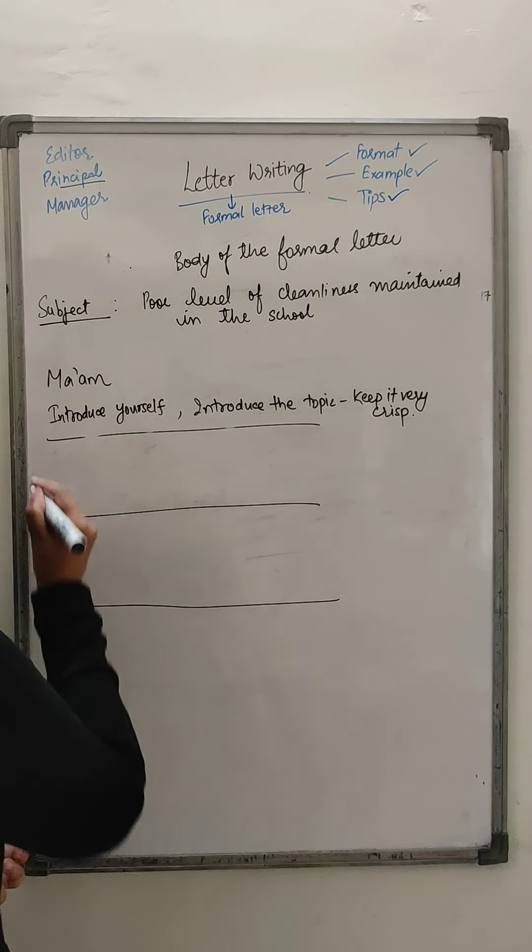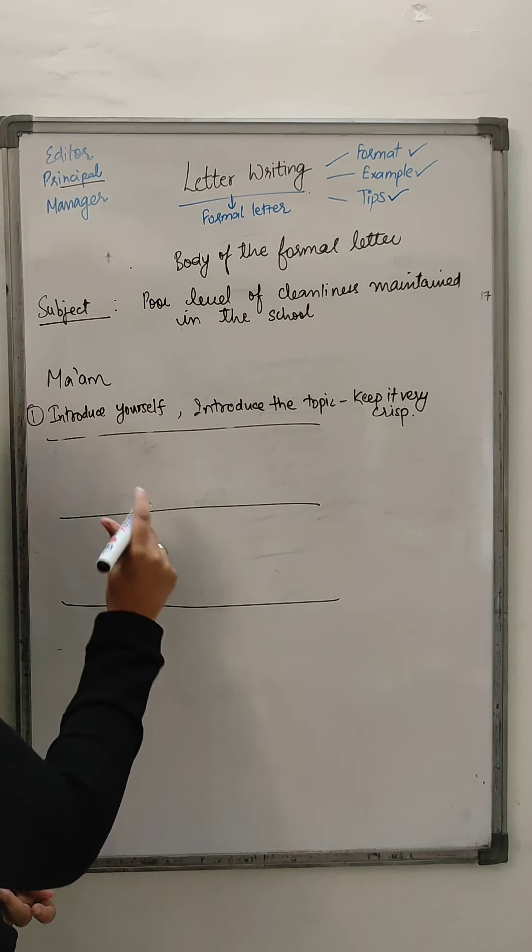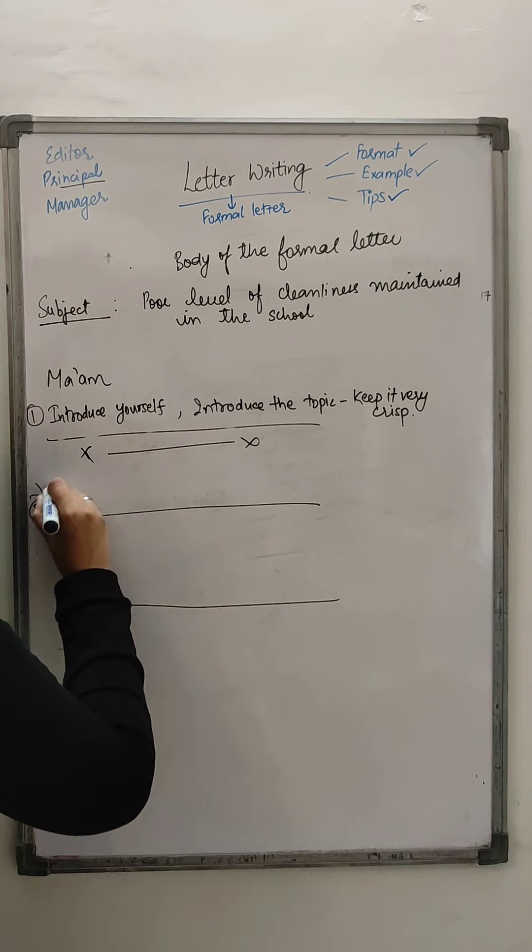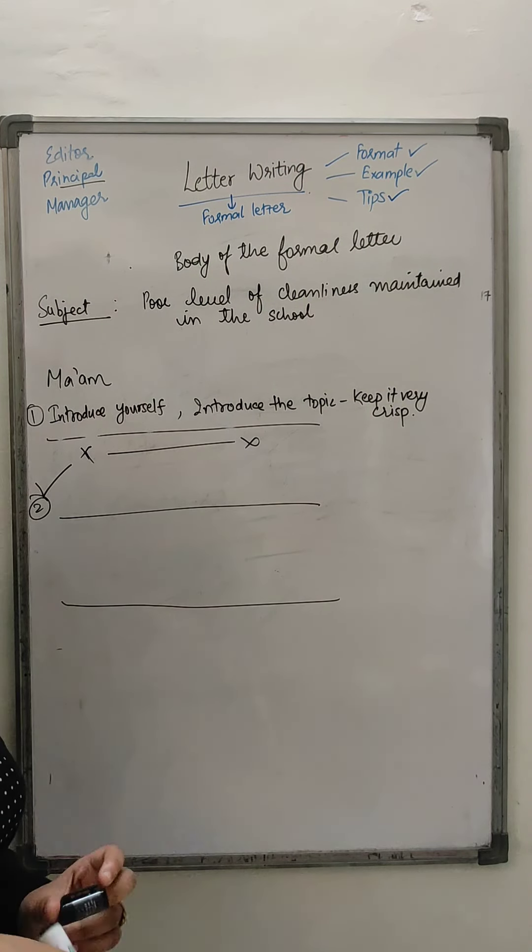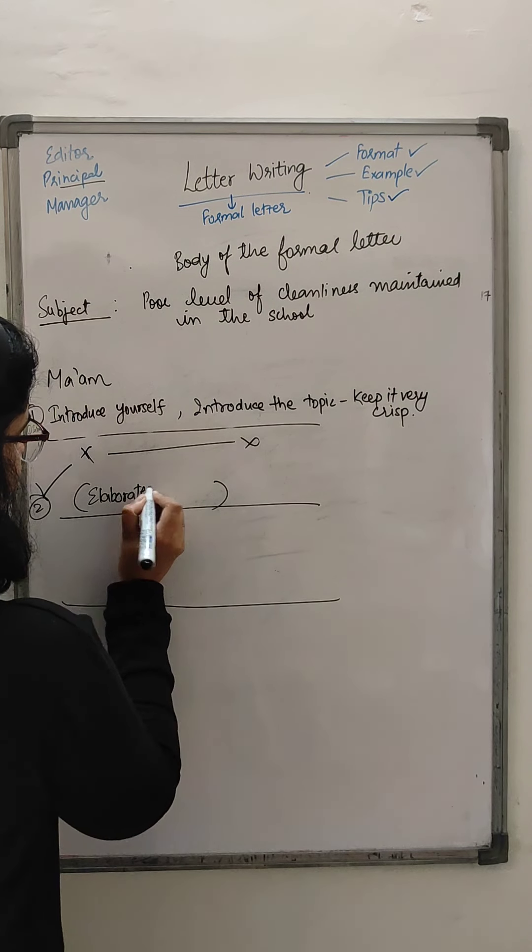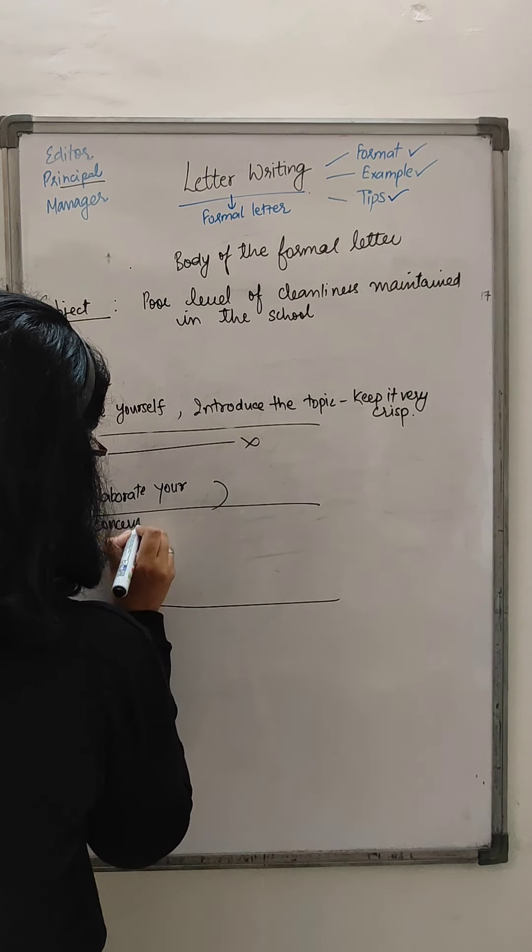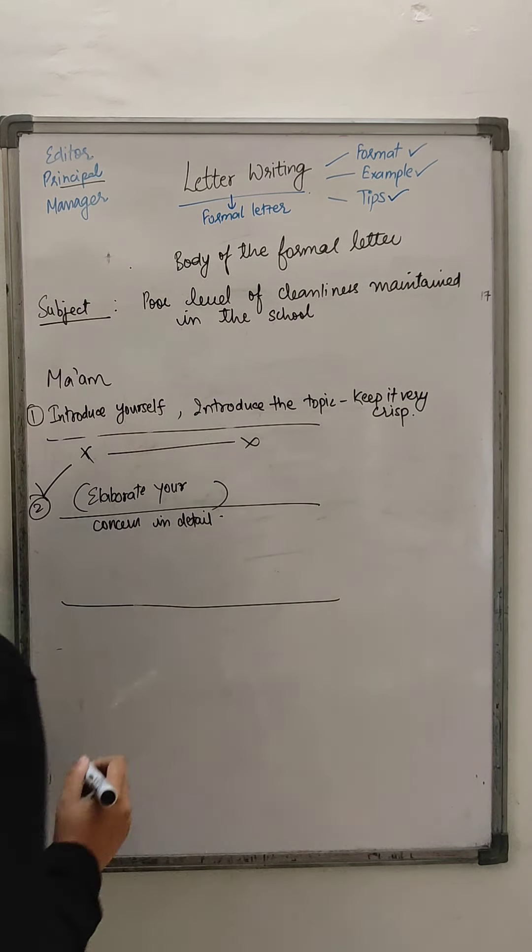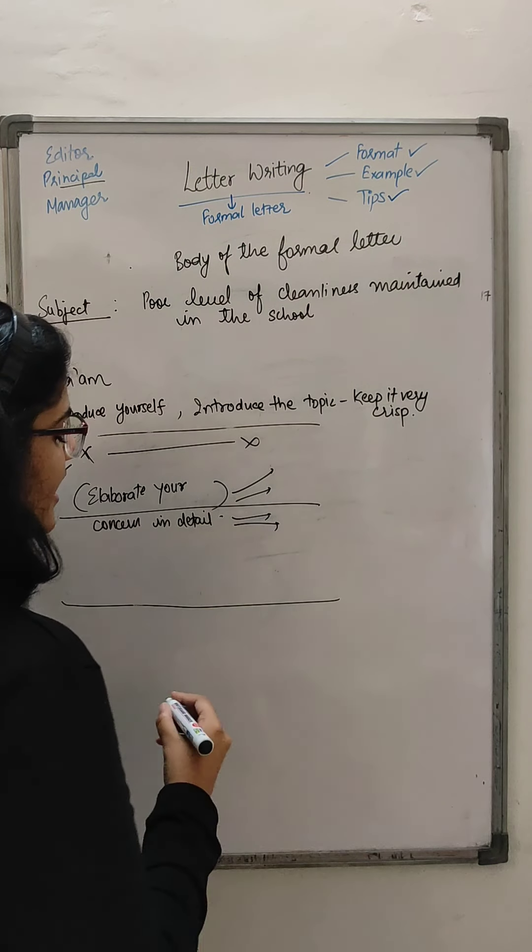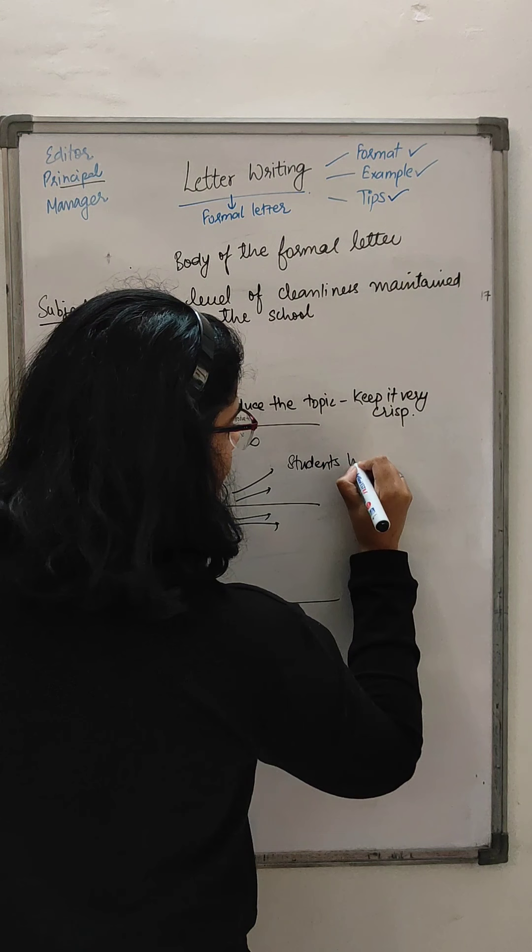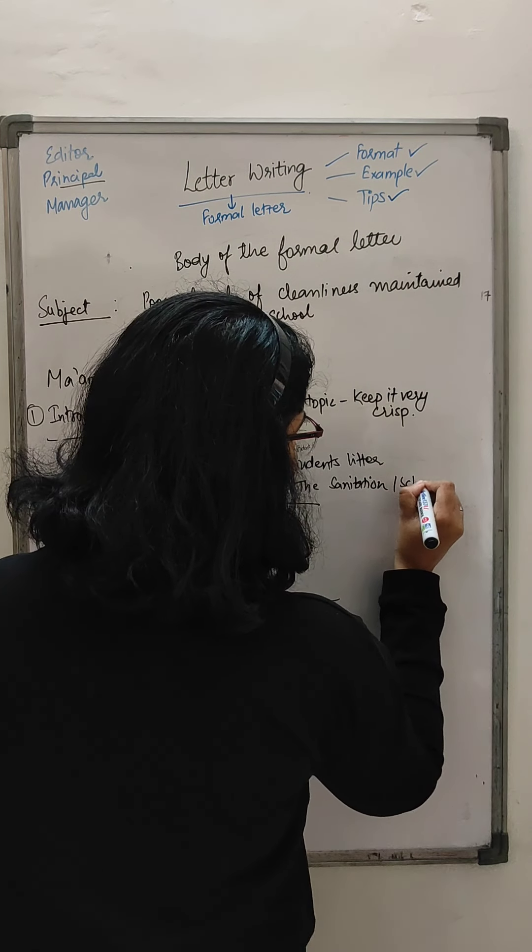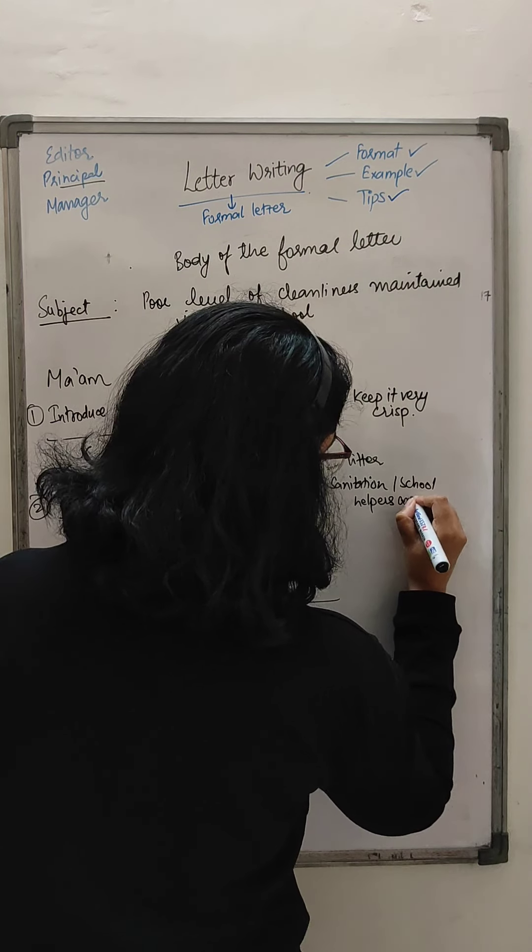This is your first paragraph. Then you leave a line here. And then you write your second paragraph. This is the most important paragraph, actually the most important. This is where you describe and elaborate your entire concern. Elaborate your concern in detail. Now, the topic is poor level of cleanliness maintained. So your second paragraph can contain the following pointers: that students litter, the sanitation or the school helpers are inefficient.